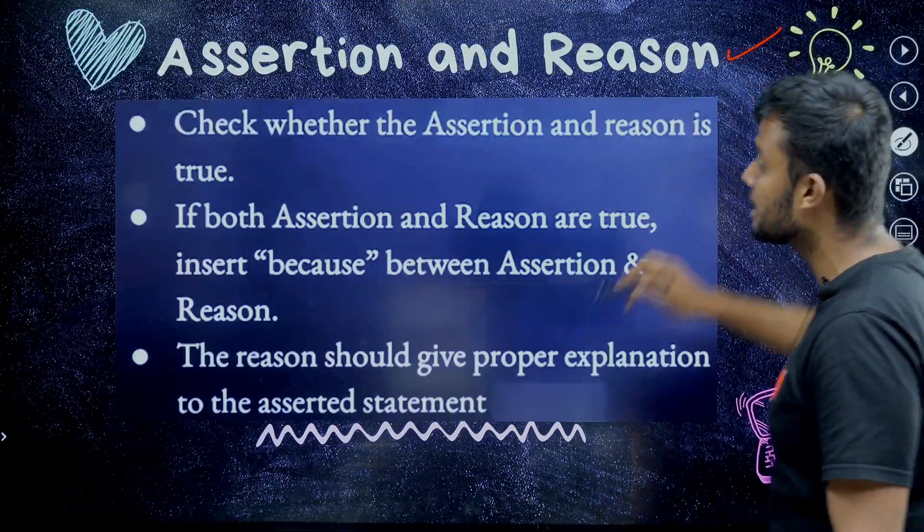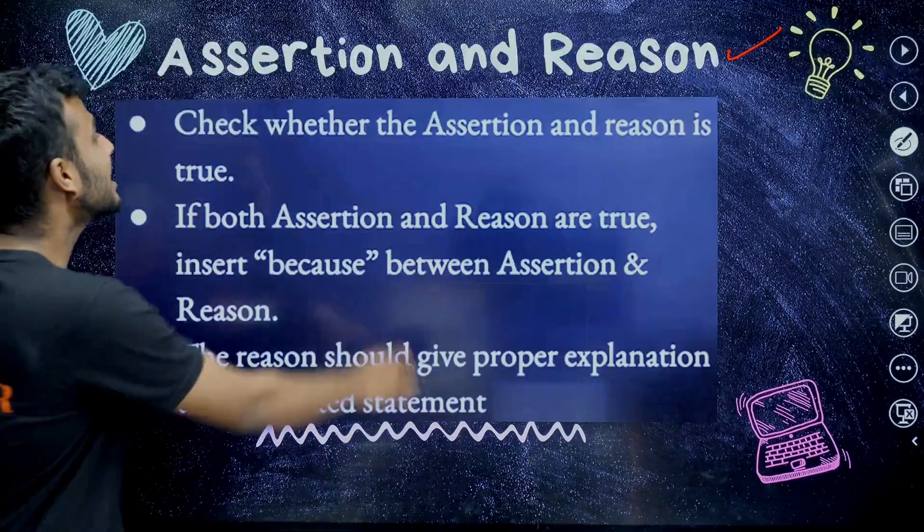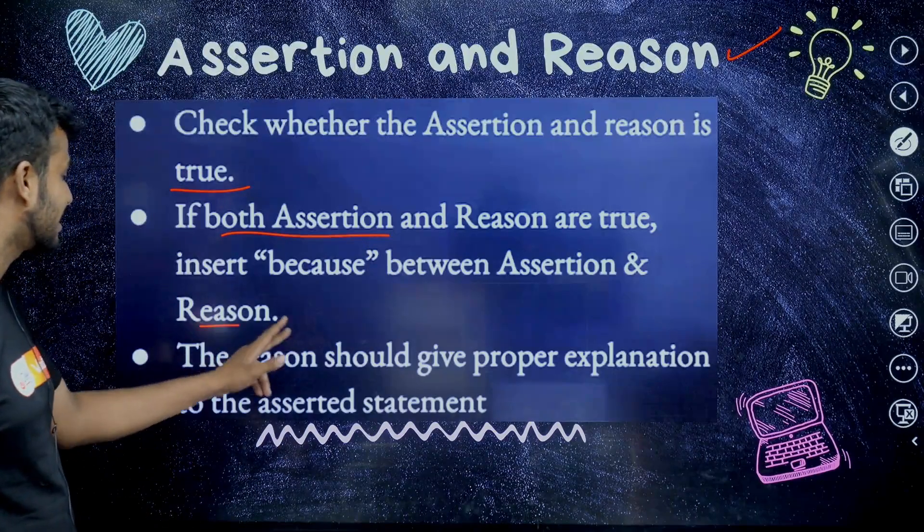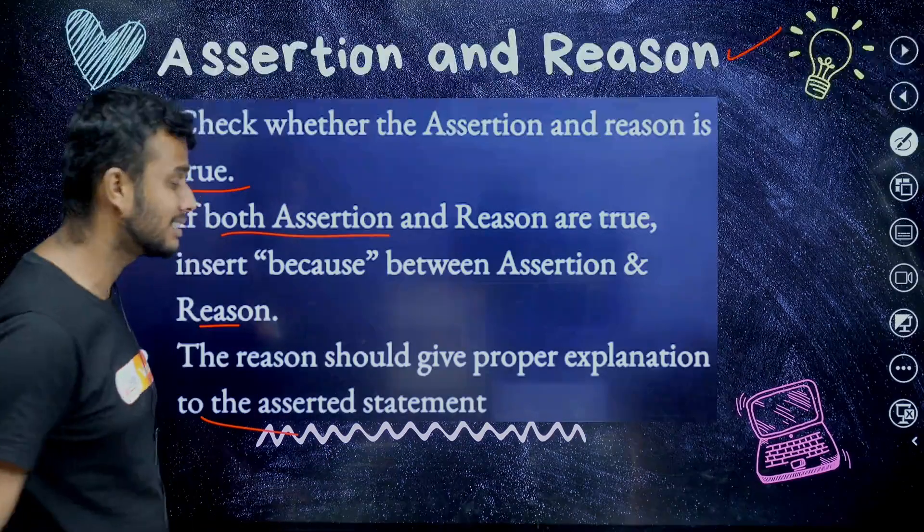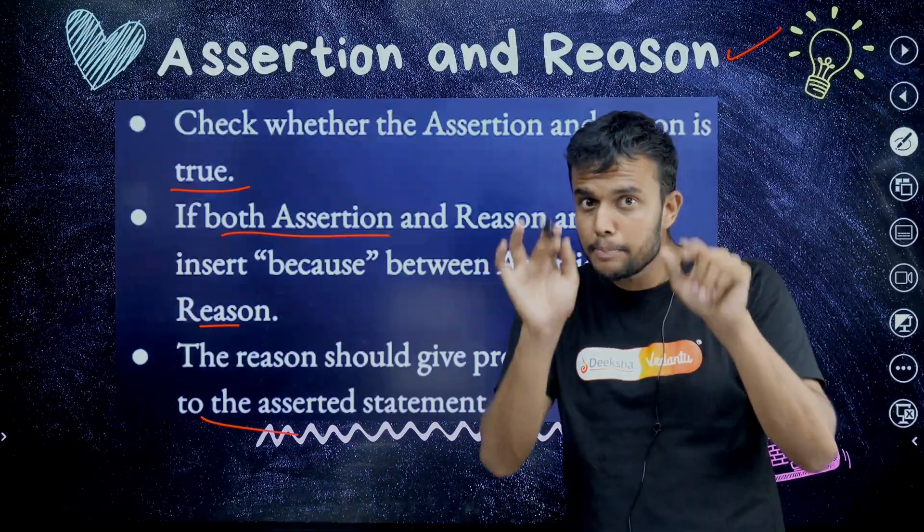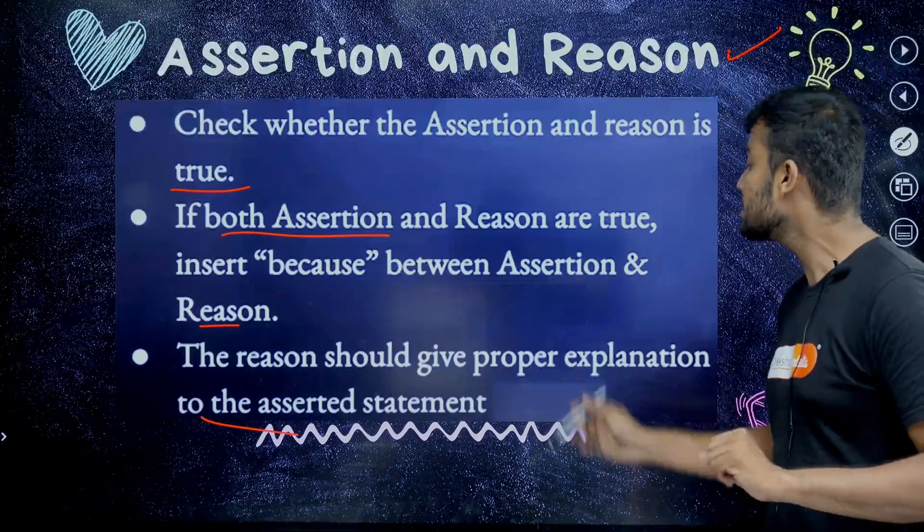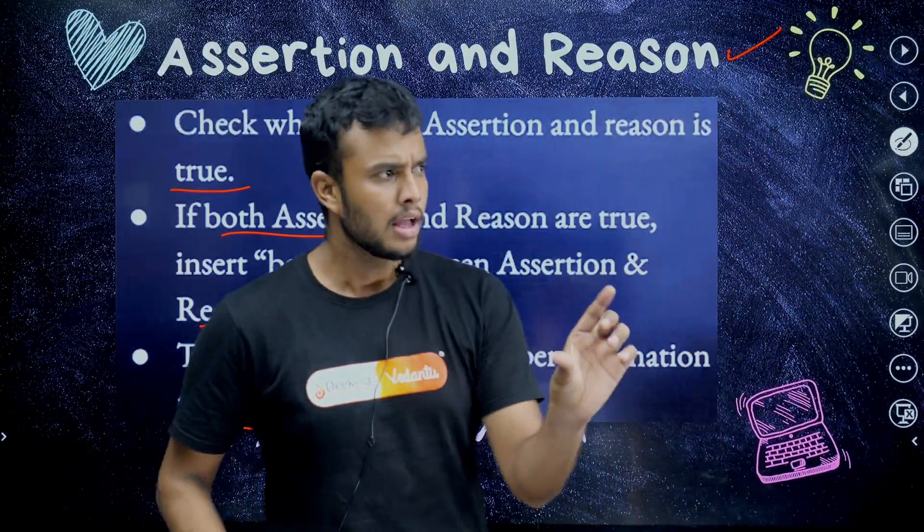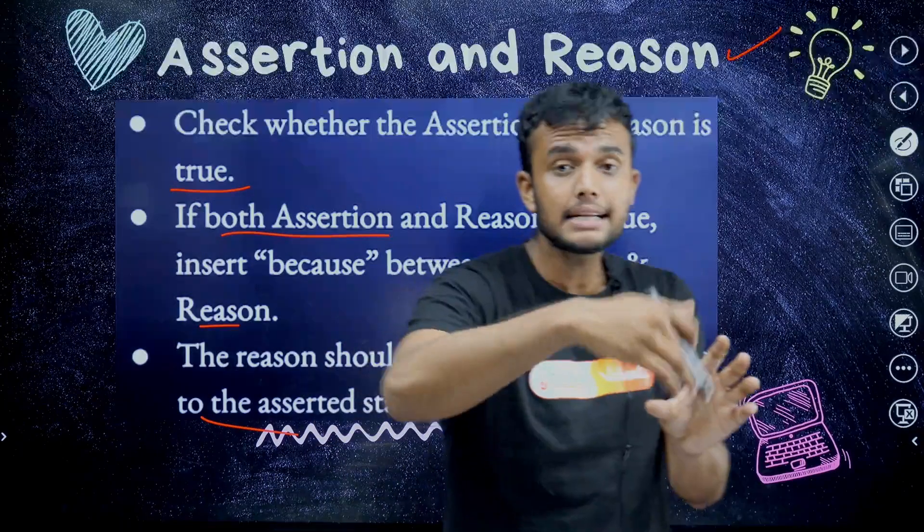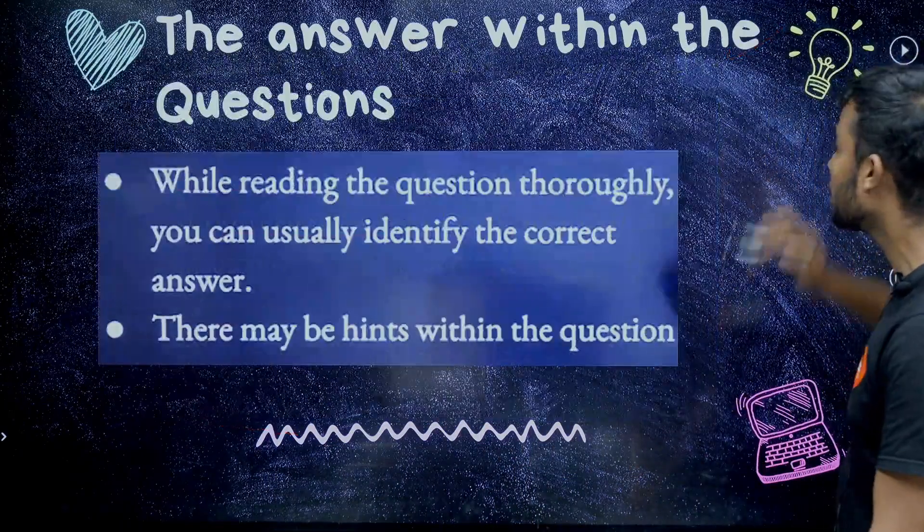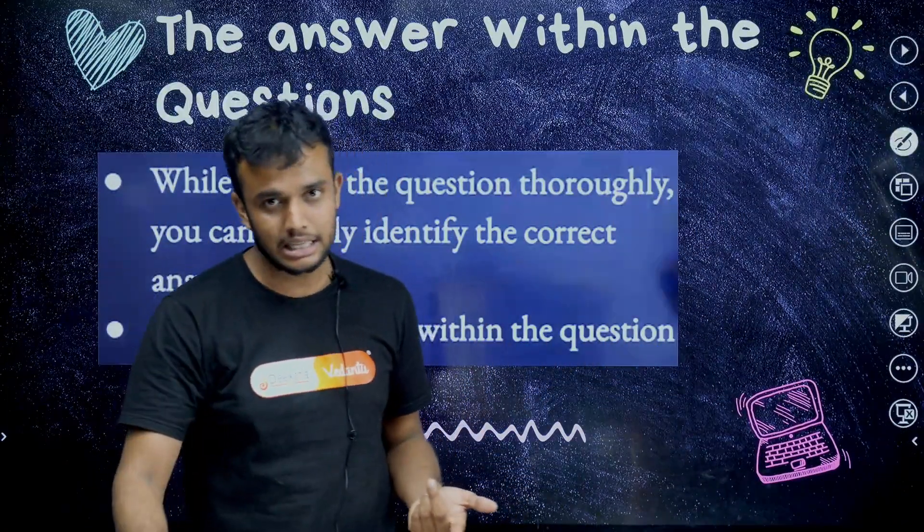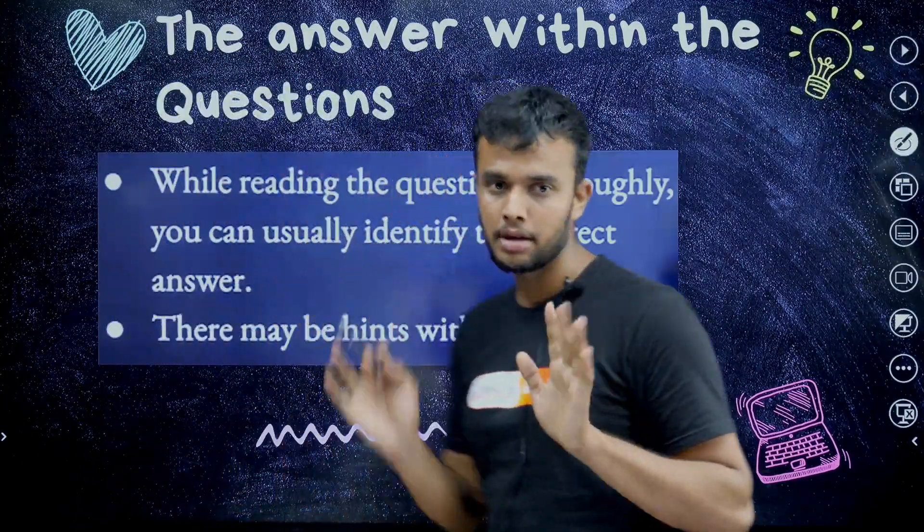Next point: assertion and reason question. This one is very important. Check whether the assertion and reason is true first. You need to check that one. Second case: if both assertion and reasons are true, then because between assertion and reason, the reason should give proper explanation to the assertion statement. In this case, first check both are correct, then after that check because. It is very important. The reason should give proper explanation. Check the reason, any relation is there, check it. And also sometimes reason is true but what happens, students, relation is not there. We cannot relate the assertion and reason. This is also one of the important technique. Most of the time, whenever the assertion and reasons both are true, definitely it is related only most of the time.